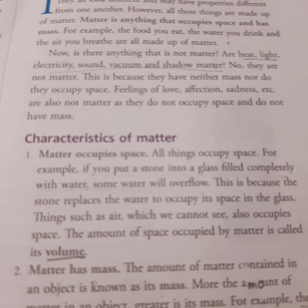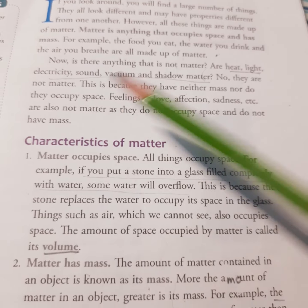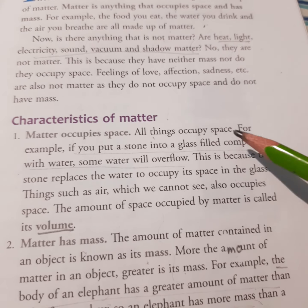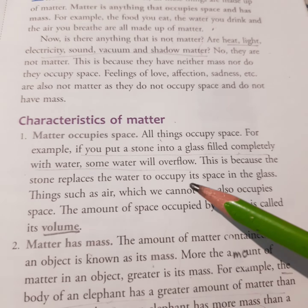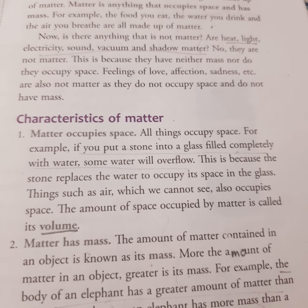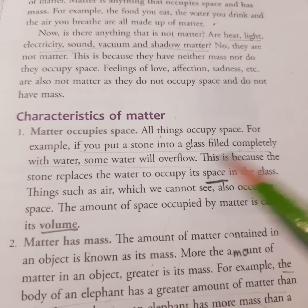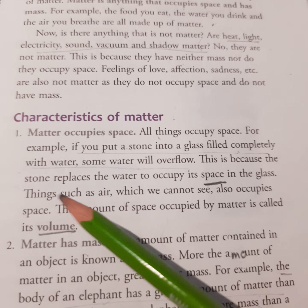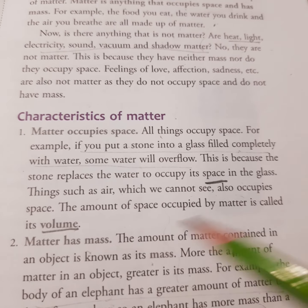Now we will study about characteristics of matter. The definition mentions space and mass, so these are the two characteristics of matter. The first one is that matter occupies space. All things occupy space. For example, if you put a stone into a glass filled completely with water, some water will overflow, because the stone replaces the water to occupy its space. Things such as air, which we cannot see, also occupy space. The amount of space occupied by matter is called its volume.